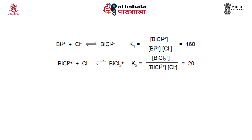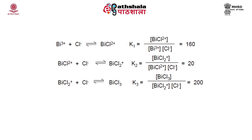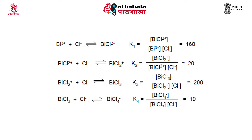Similarly, stepwise equilibrium constants are obtained — K1, K2, K3, K4 — and they are combined to give the overall equilibrium constant, which is usually 6.4 × 10⁶.